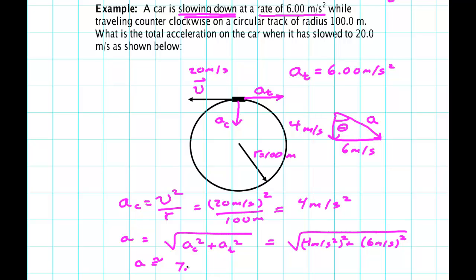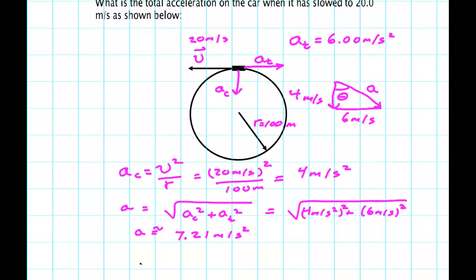And to find the angle phi - I mean theta - theta would be the tan inverse of 6 meters per second squared.